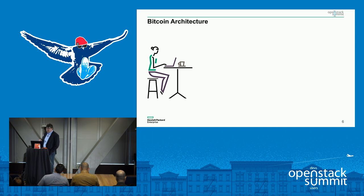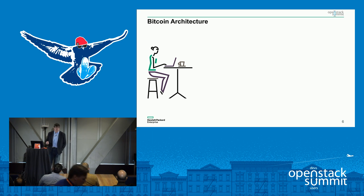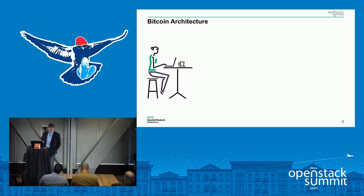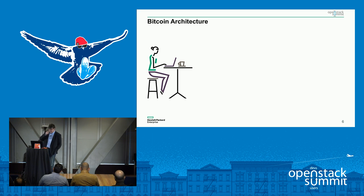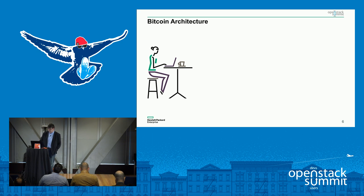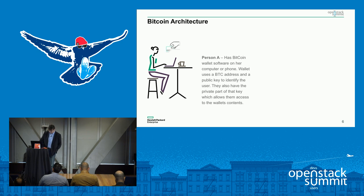Having said that, I do want to talk about the Bitcoin architecture, because it's usually the easiest way to explain what blockchain is, where it fits in, and the components within it. So we'll walk through a Bitcoin transaction. We've got our user here — she's sat at a café and wants to pay for coffee using Bitcoin. So this is Person A.